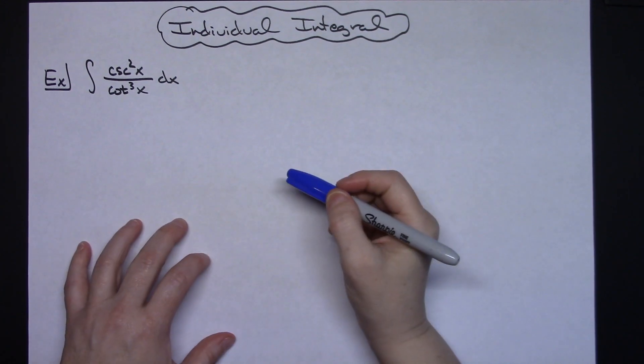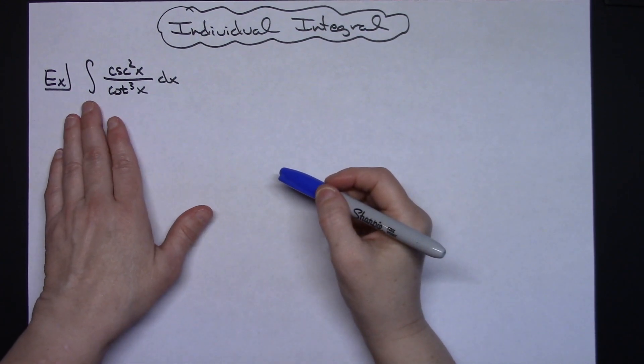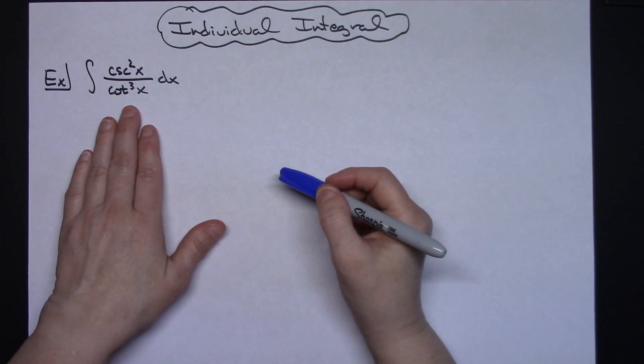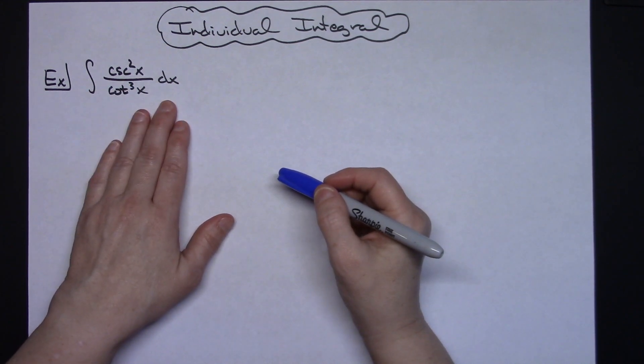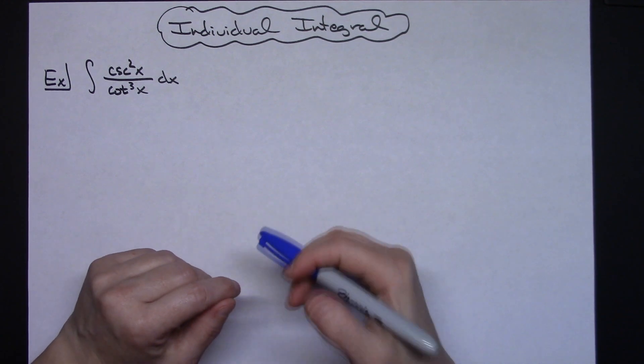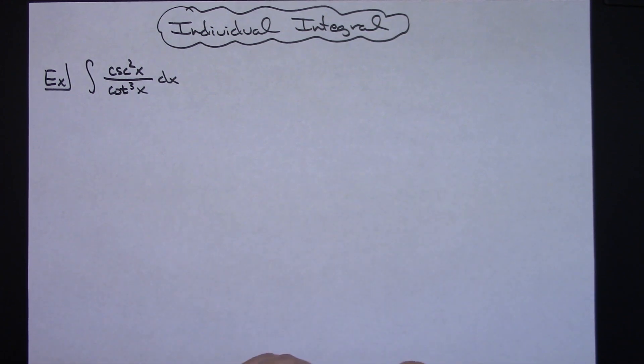In this video I'm going to be working out an individual integral. We're going to take a look at the integral of cosecant squared x over cotangent cubed x dx. For the most part it's going to be a basic u substitution and then we'll have some discussion at the end just exactly how far do you really have to go with this.